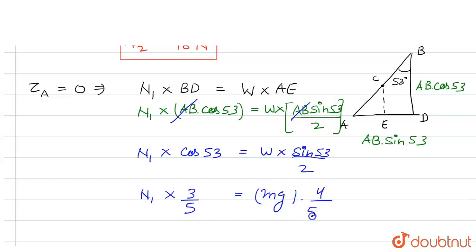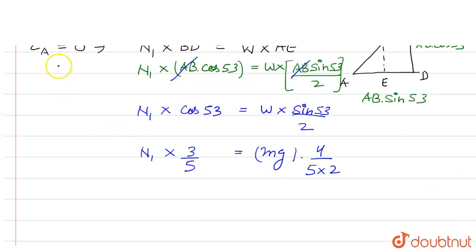Now on canceling 5 on both sides, we will have N1 equals m, which is 10, times 9.8, that is g.